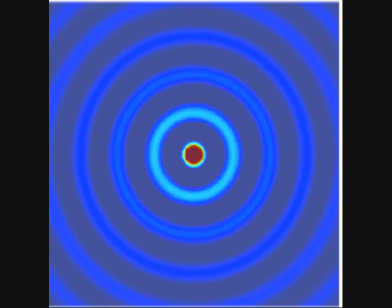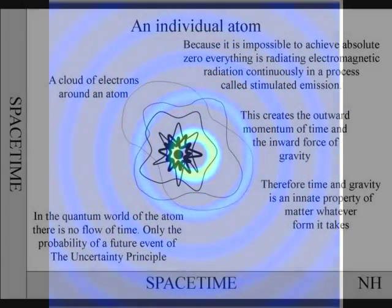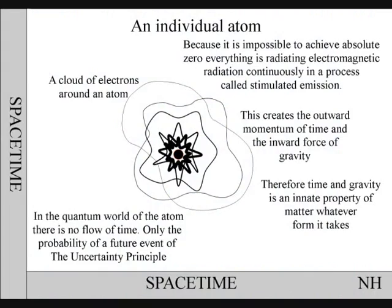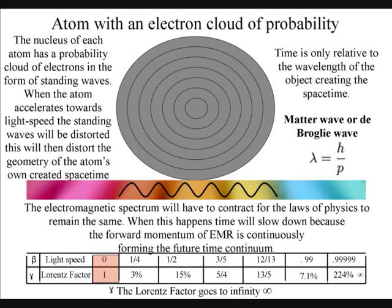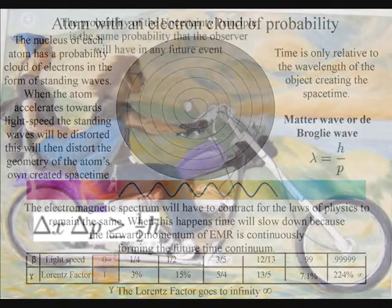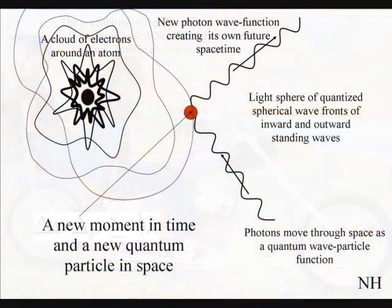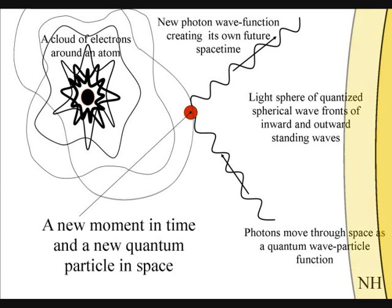But when we zoom in on an individual atom, we find time-independent quantum mechanics, and there is no flow or arrow of time, and all we have is an electron cloud of probability. The probability of the uncertainty principle is the same probability that the observer will have with any future event.